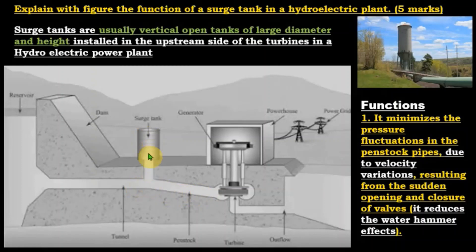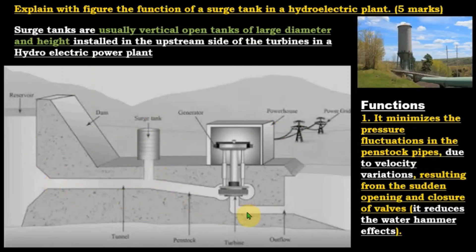The surge tank essentially reduces the water hammer effects — that is the first important function. This diagram shows the layout of a hydroelectric power plant with the surge tank in position: the dam, the power station with turbine and generator installed, the powerhouse, and power grids.